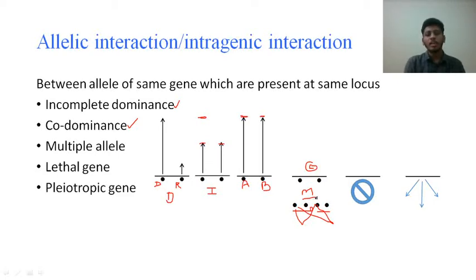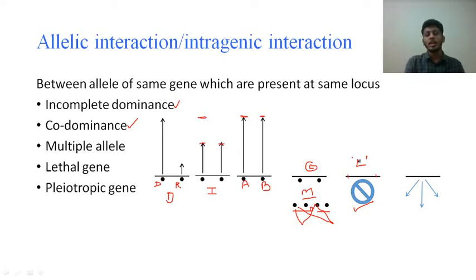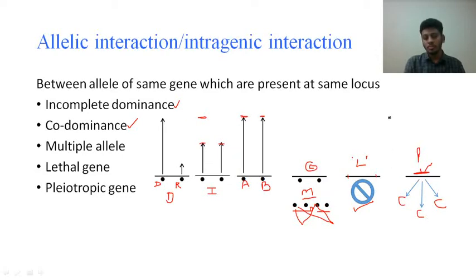Lethal means death. In certain gene interactions, some genes — when completely expressed — cause the death of the organism in which they are expressed; such genes are called lethal genes. In pleiotropic genes, a single gene has the potentiality to correspond to more than one character. Until now we studied one gene giving one character via two alleles, but a pleiotropic gene can give rise to many different characters.